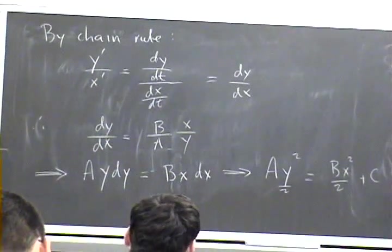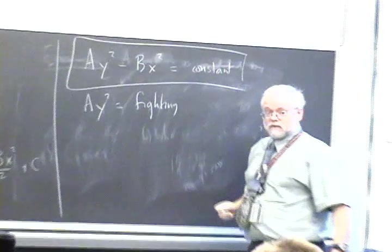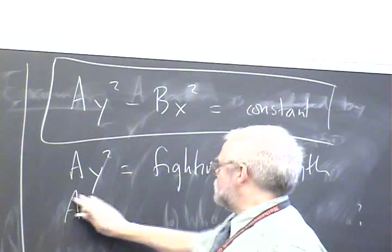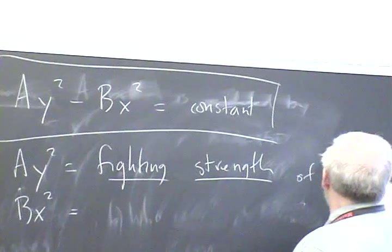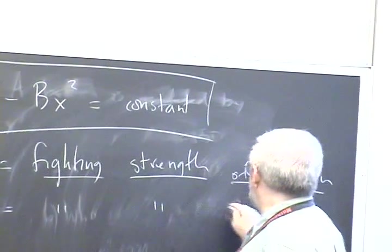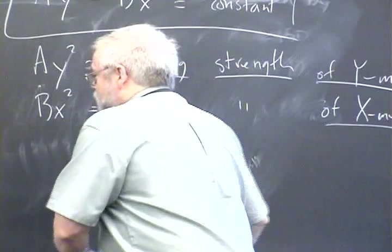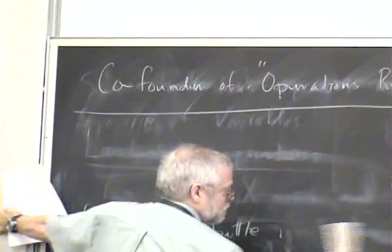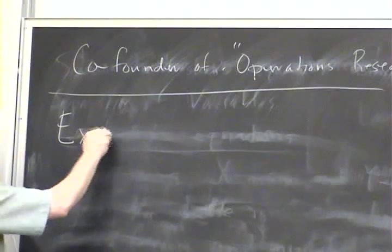This constant can be determined from the initial conditions. This expression, A·Y², actually has a name called fighting strength - the fighting strength of the Y-men. And that means that B·X² is the fighting strength of the X-men. Lanchester's Square Law says that if you have constant fighting effectiveness, then the relative fighting strength is constant.